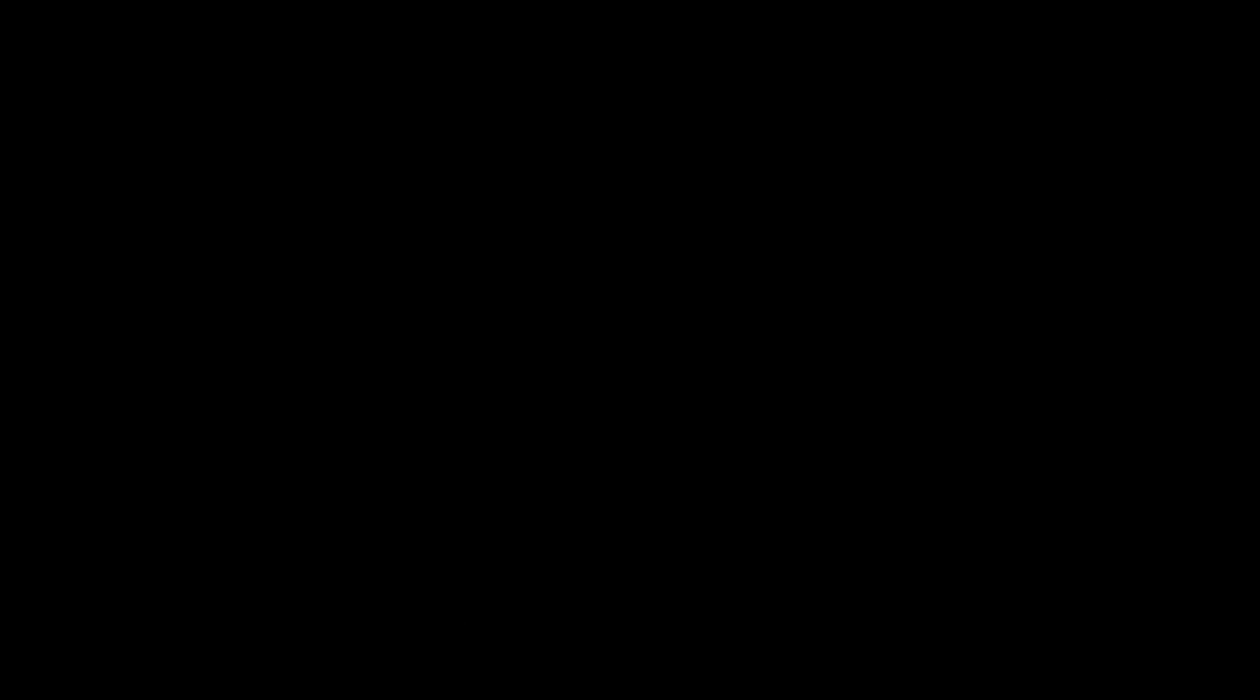Separated by about 2,000 years, Euclid and Euler proved the two halves of the theorem that states that n is an even perfect number if and only if n can be written as the form 2 raised to the quantity p minus 1 multiplied by 2 to the p minus 1, where 2 to the p minus 1 is prime.